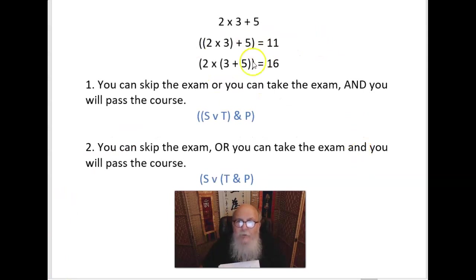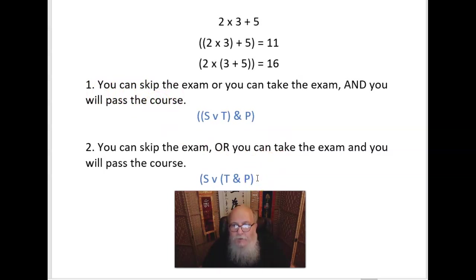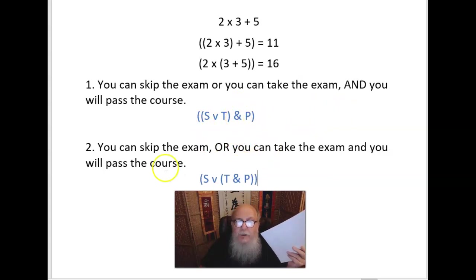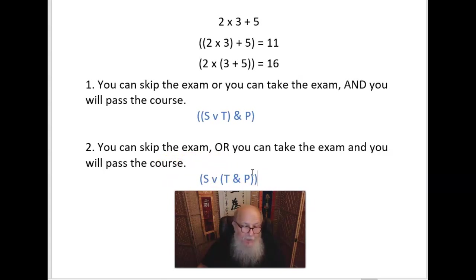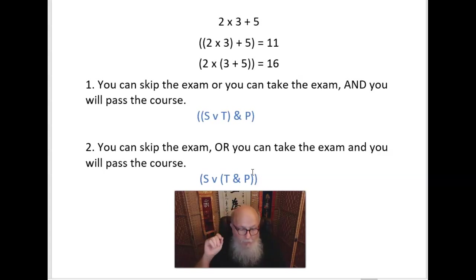So just like in math, we use parentheses to disambiguate — to get unambiguous expressions. Consider our two examples again symbolized: 'You can skip the exam, or you can take the exam, and you will pass the course' versus 'You can skip the exam, or you can take the exam, and you will pass the course.' This is called disambiguation, which means to make the expression unambiguous. When we look at expressions in English, there will be various grammatical clues that help us see what proposition the sentence is meant to express, so we need to have a grasp of English grammar to translate our sentences properly.